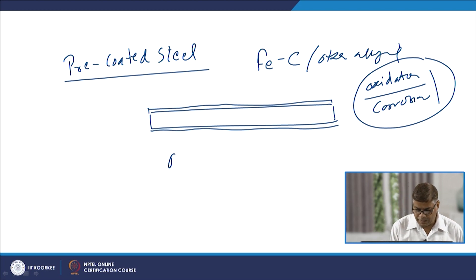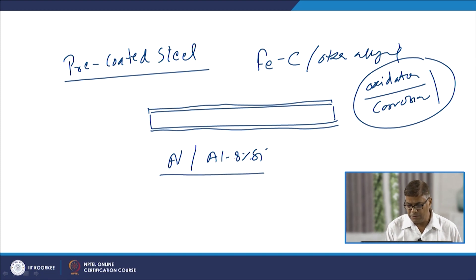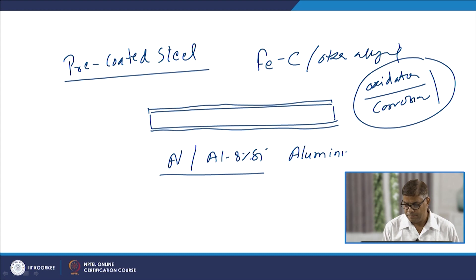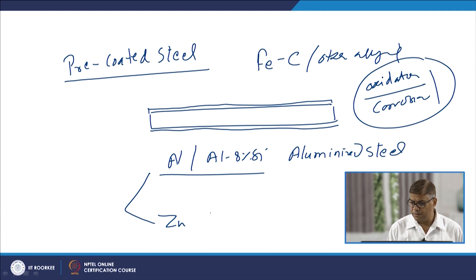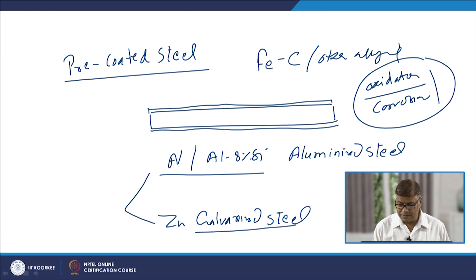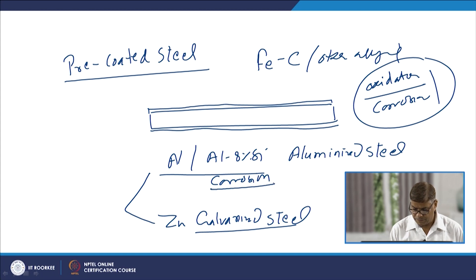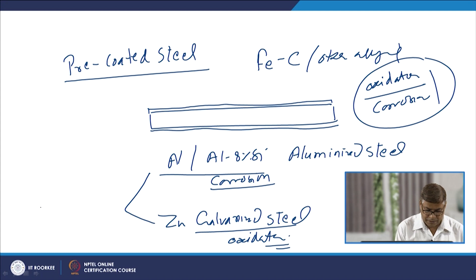Coatings of aluminium or aluminium-8% silicon alloy — when coating of either pure aluminium or aluminium-8% silicon alloy is made on the steel — it is called aluminized steel. On the other hand, coating of zinc onto the surface of steel is called galvanized steel. Aluminized steels offer very good resistance to corrosion, while resistance to oxidation is offered by galvanized steel. These are the two broad categories of precoated steels.